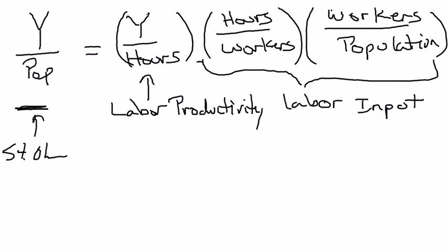You can break real GDP per capita up, as shown on the right-hand side of this equation, into three things. This is really just an accounting identity — it has to hold. You have real GDP on top divided by the number of hours worked in the economy, and that's our measure of labor productivity — output per worker hour, or real GDP per worker hour.